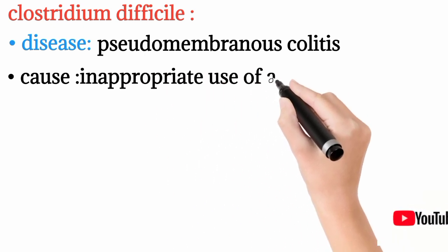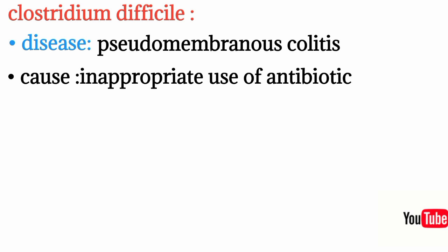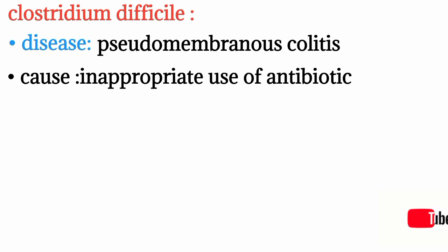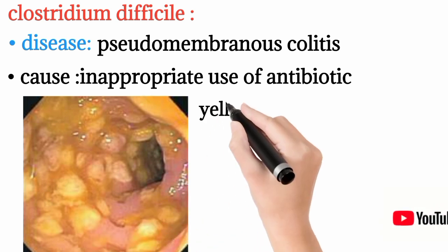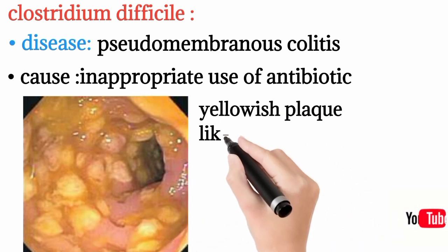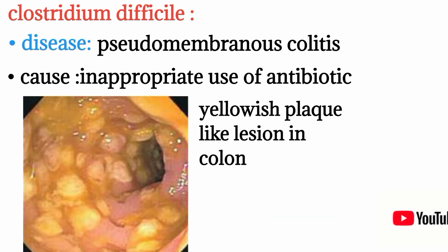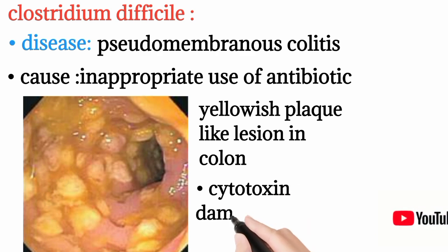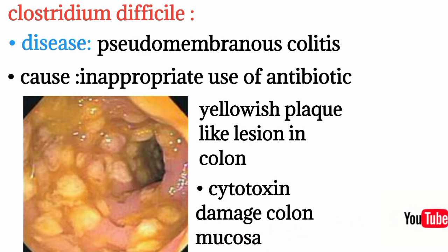When normal flora is suppressed by excess antibiotics, Clostridium difficile can proliferate in the colon. Its exotoxin (cytotoxin) damages the colon mucosa, leading to pseudomembrane formation — presenting as yellowish plaque-like lesions visible on colonoscopy.